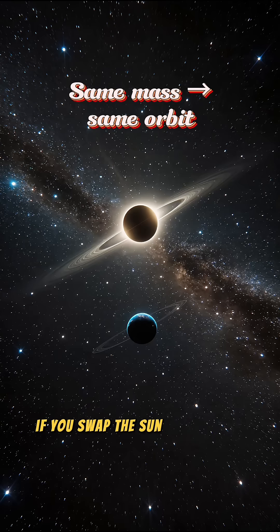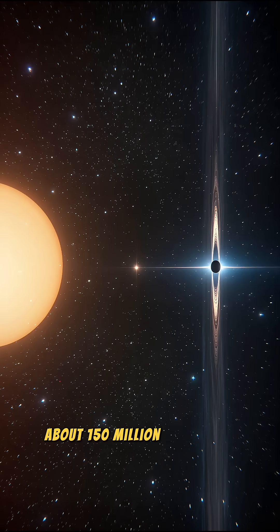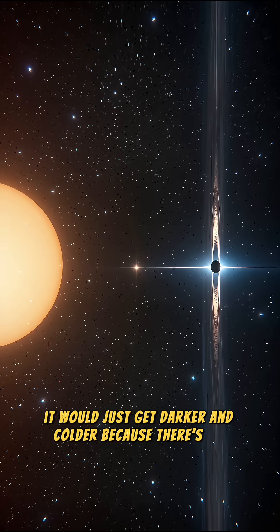If you swap the sun for a black hole with exactly the sun's mass, Earth would keep circling once a year at one astronomical unit, about 150 million kilometers, feeling essentially the same pull. The neighborhood wouldn't get hoovered, it would just get darker and colder because there's no sunlight.